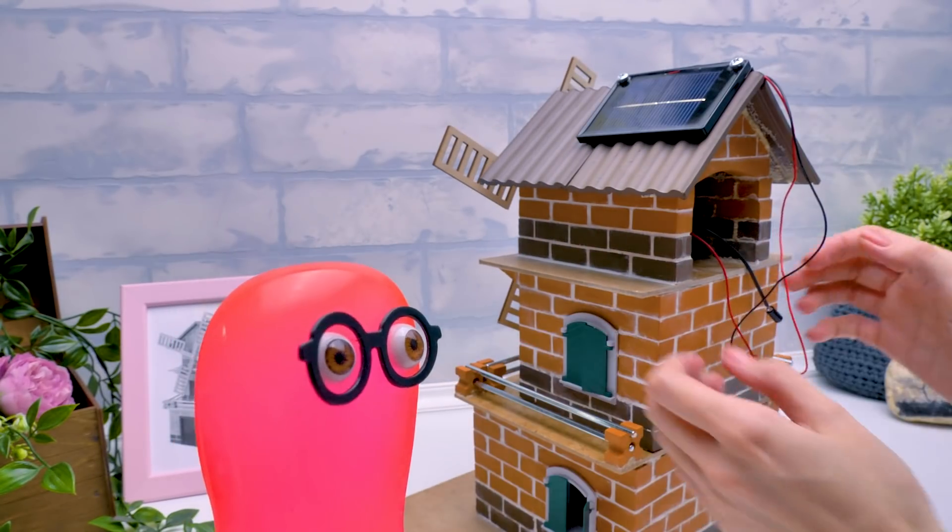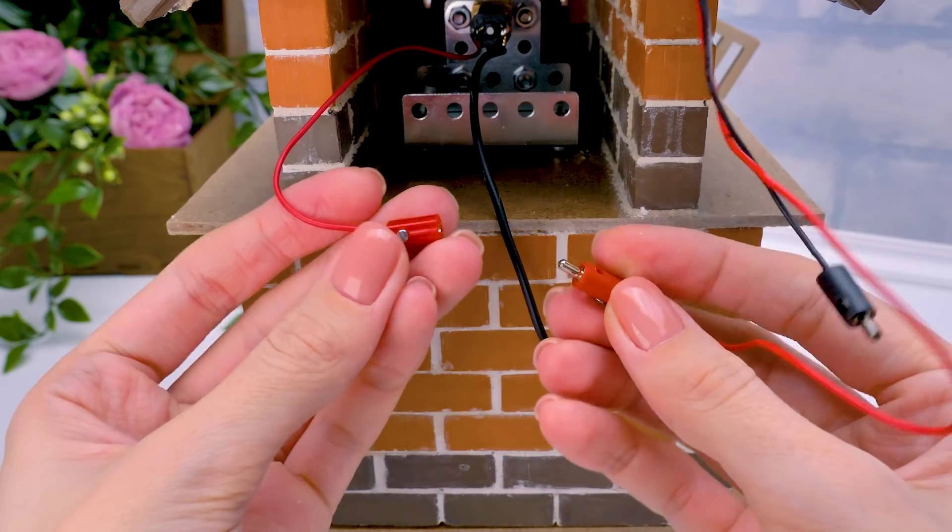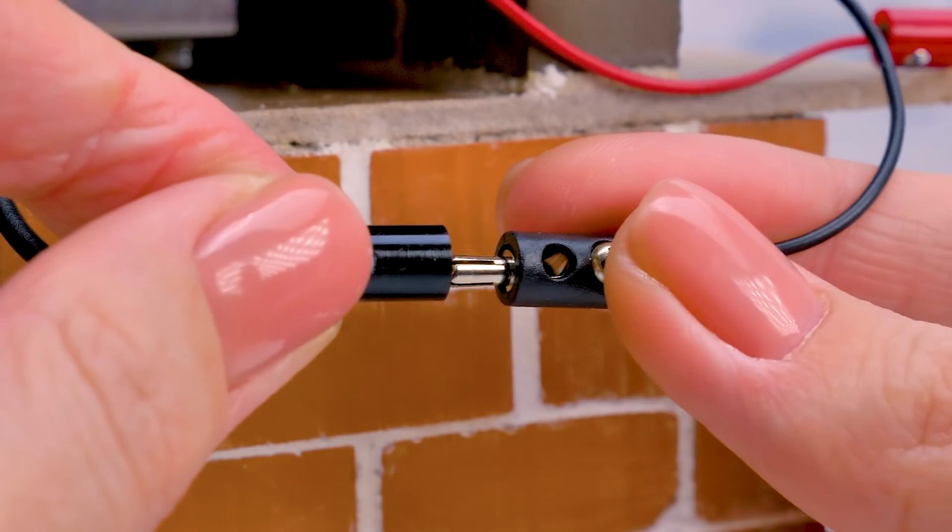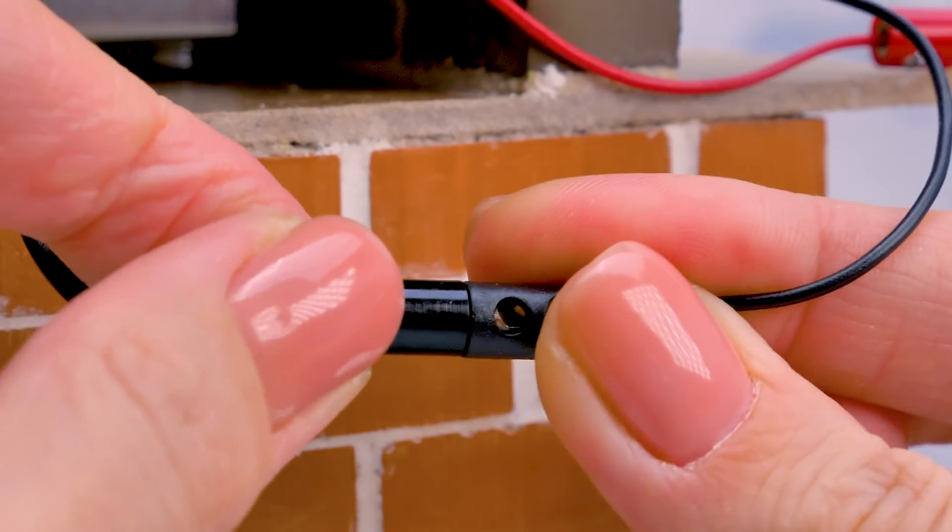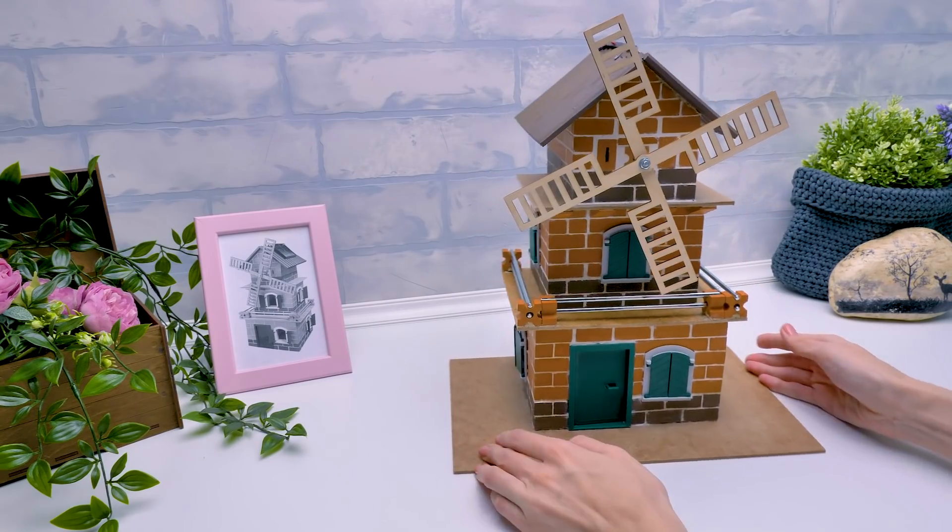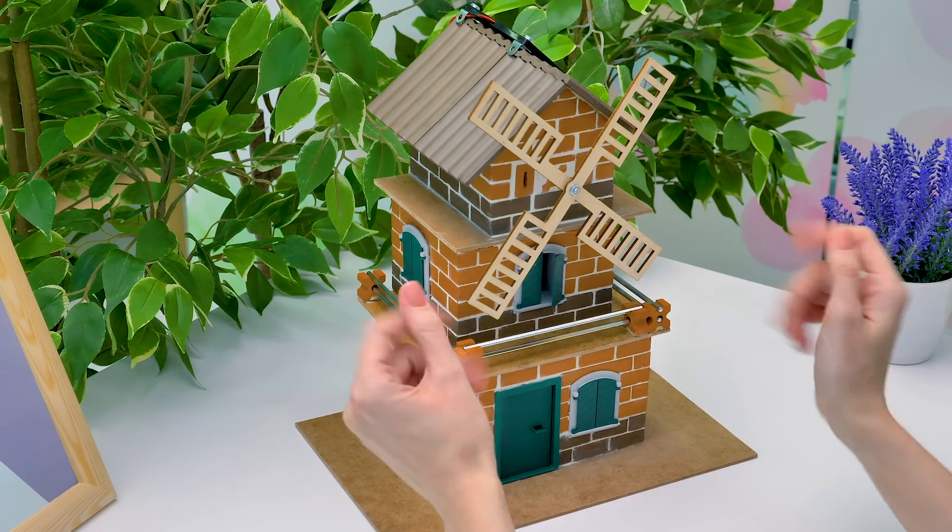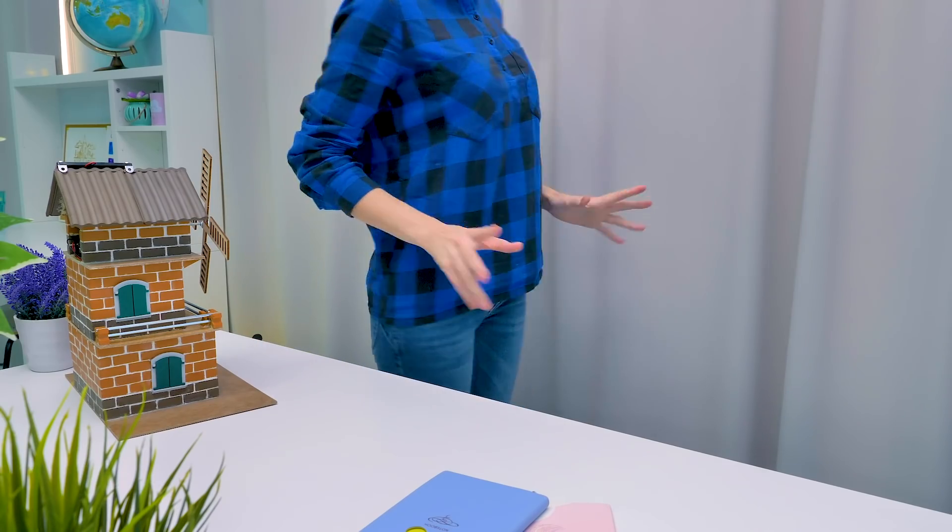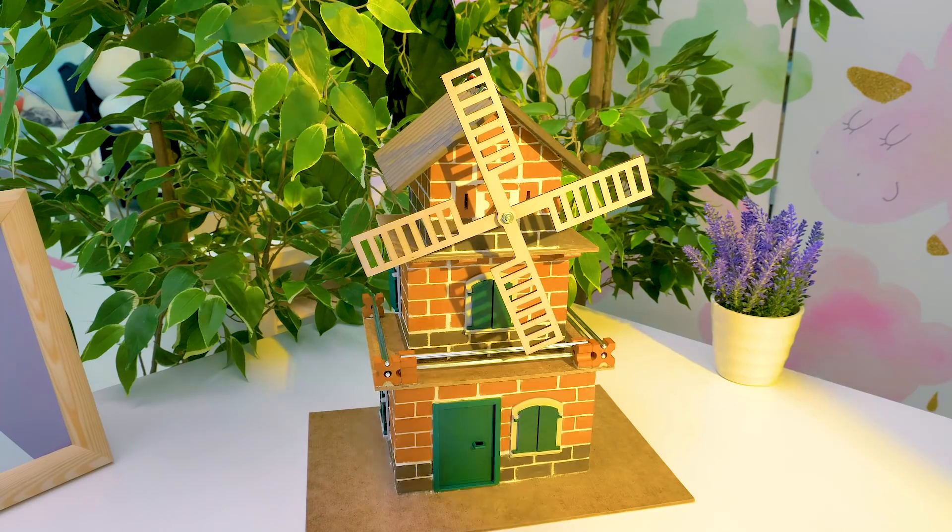Sure, but first we need to connect the wires of the mechanism. We do it by colors. Red connects to red. Black to black. Easy peasy. Perfect! Come with me! So, windmill, it's your big moment. Catch the sunlight! We need more light. Let's open the window.